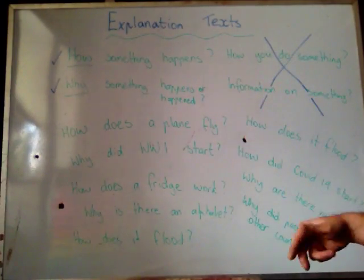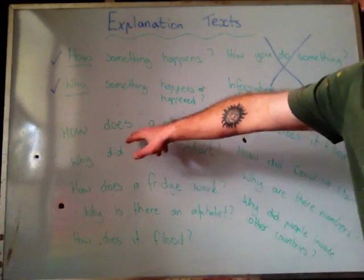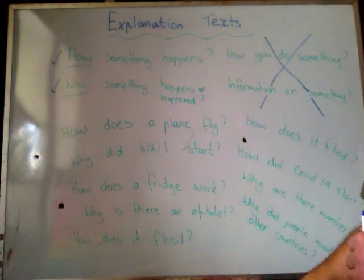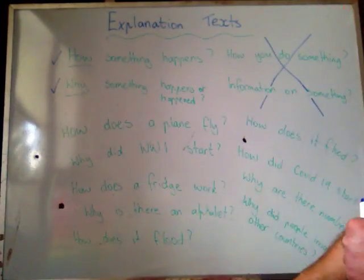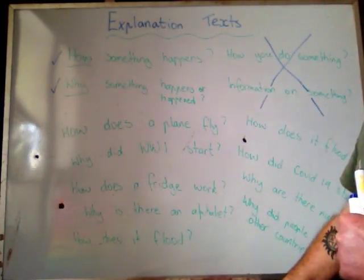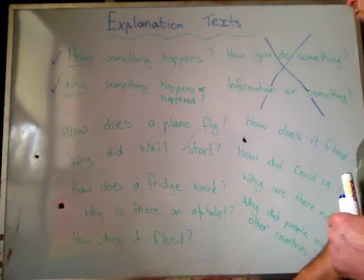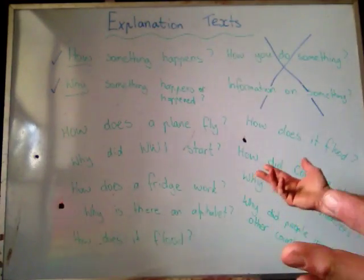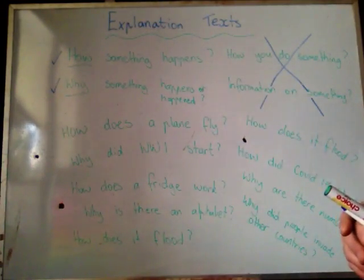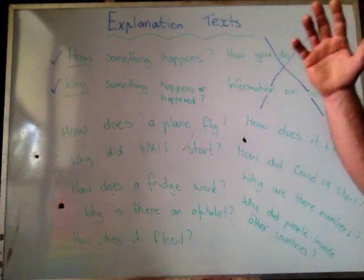If you start getting confused, watch this video again. Here are some brainstorming ideas for what you can possibly write about: How does a plane fly? Why did World War One start? How does a fridge work? Why is there an alphabet? How does it flood? How did COVID-19 start? Why are there numbers — why they're important? And why did people invade other countries? Those are just a few of the many questions you could explore.